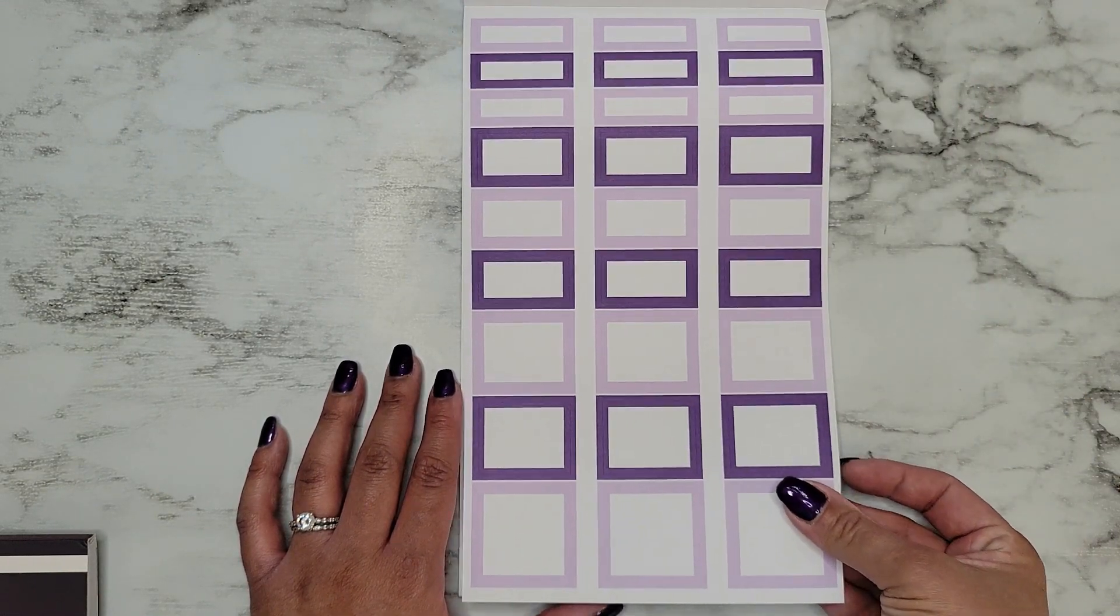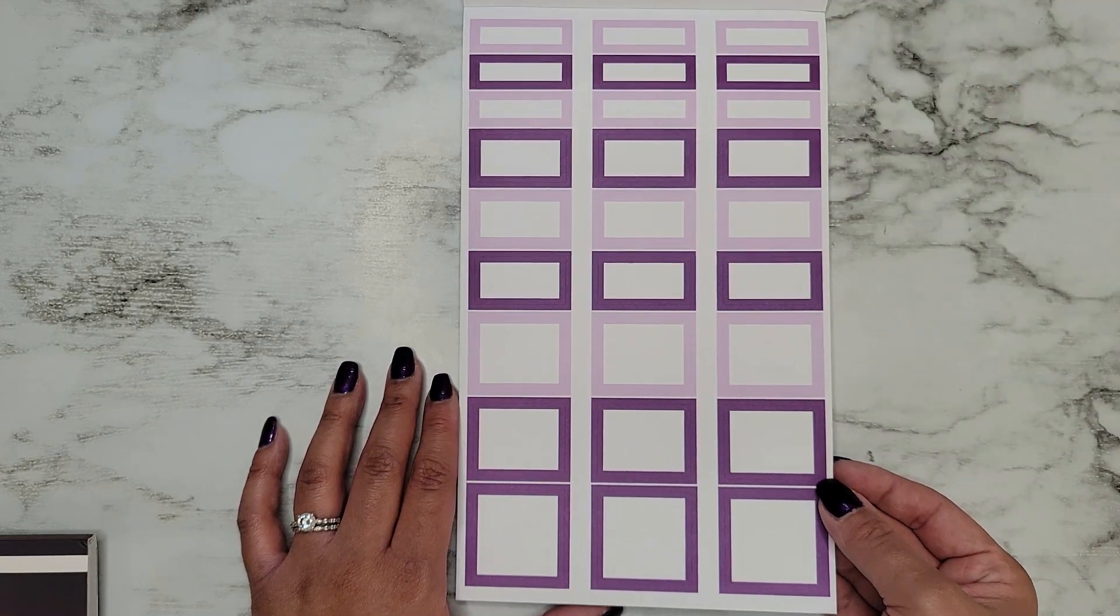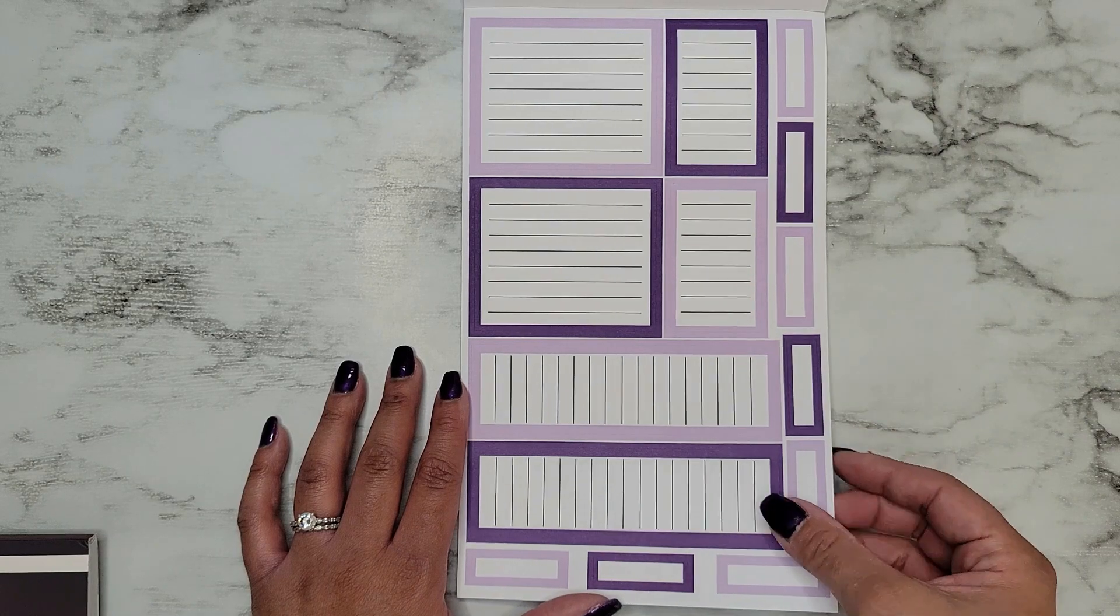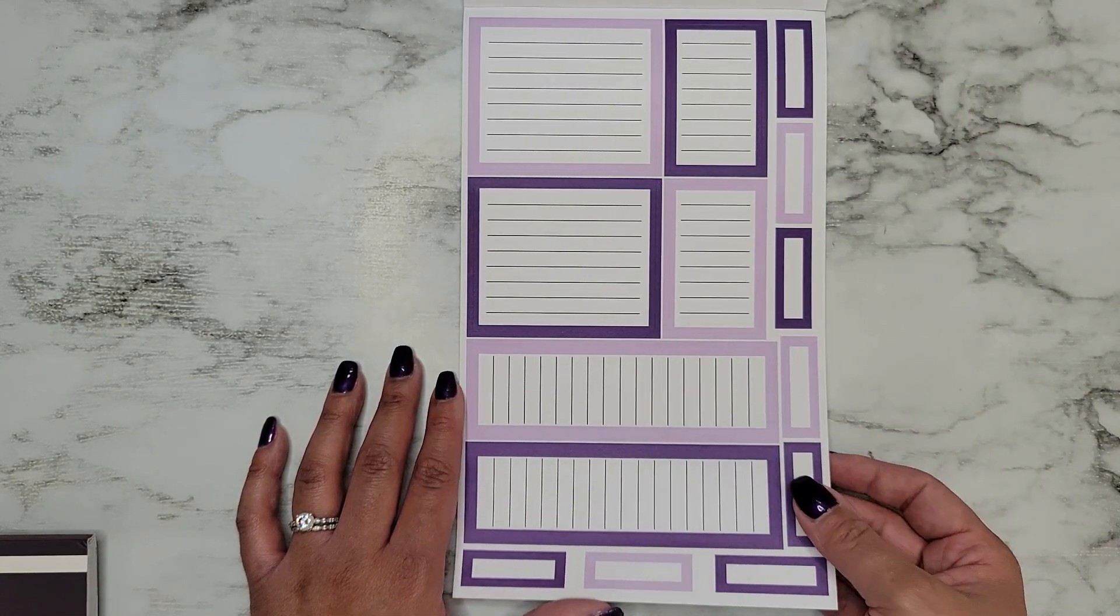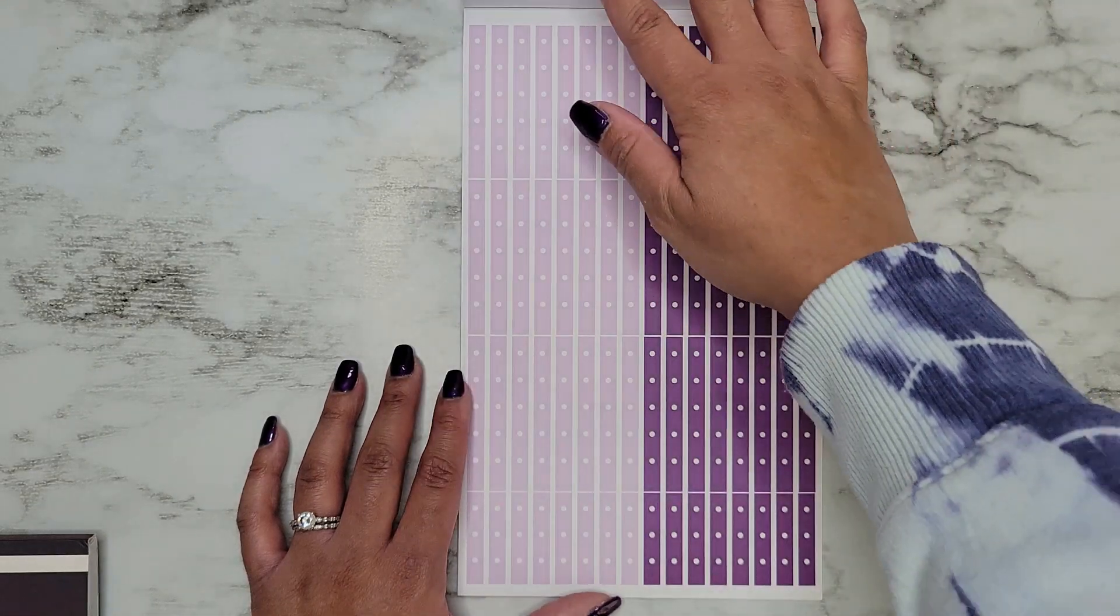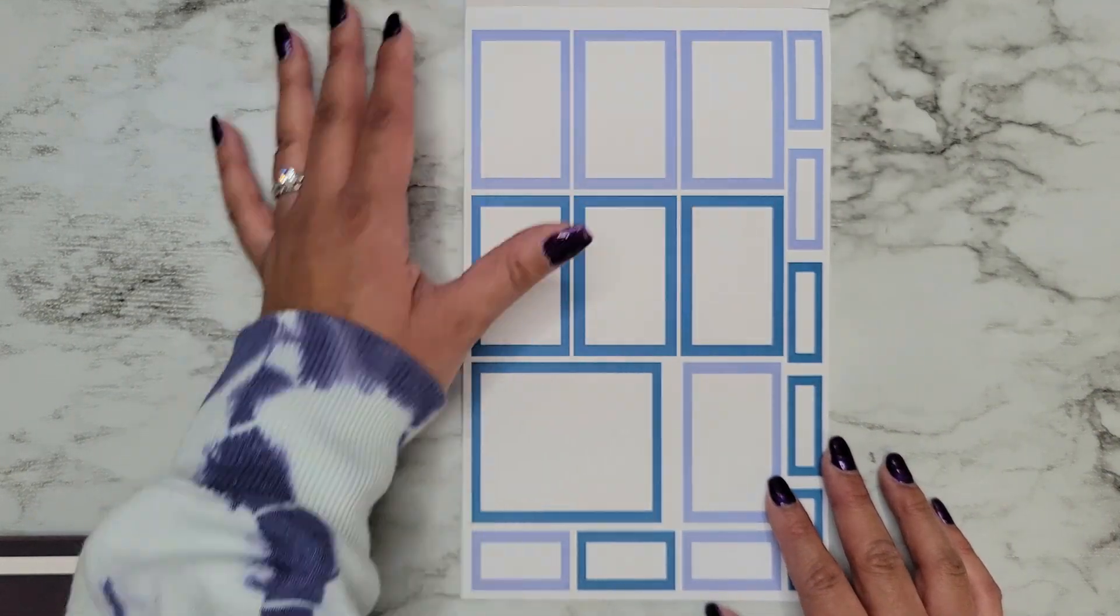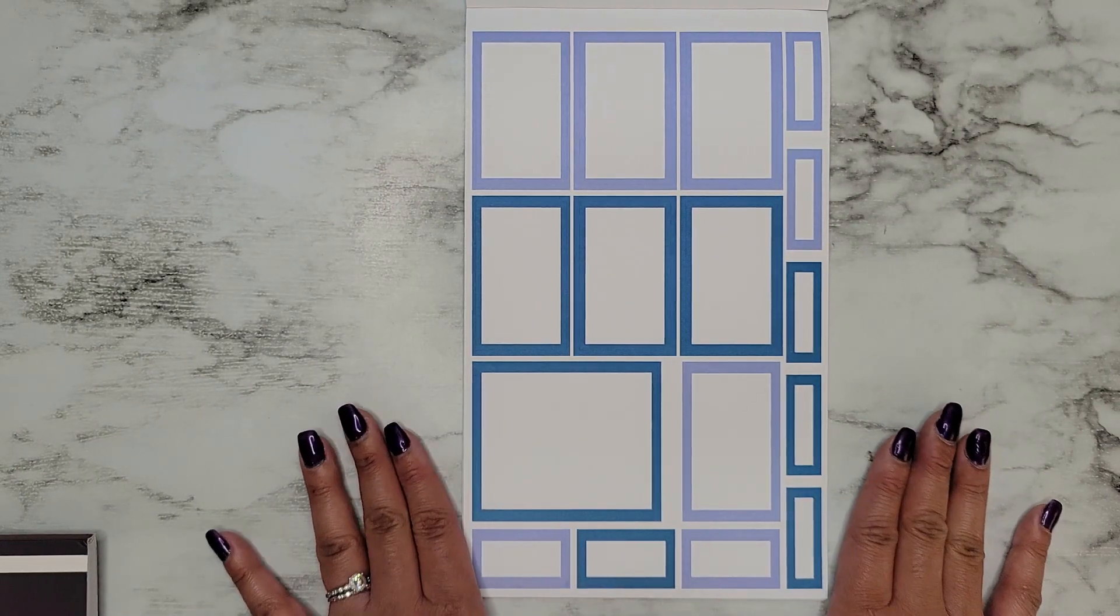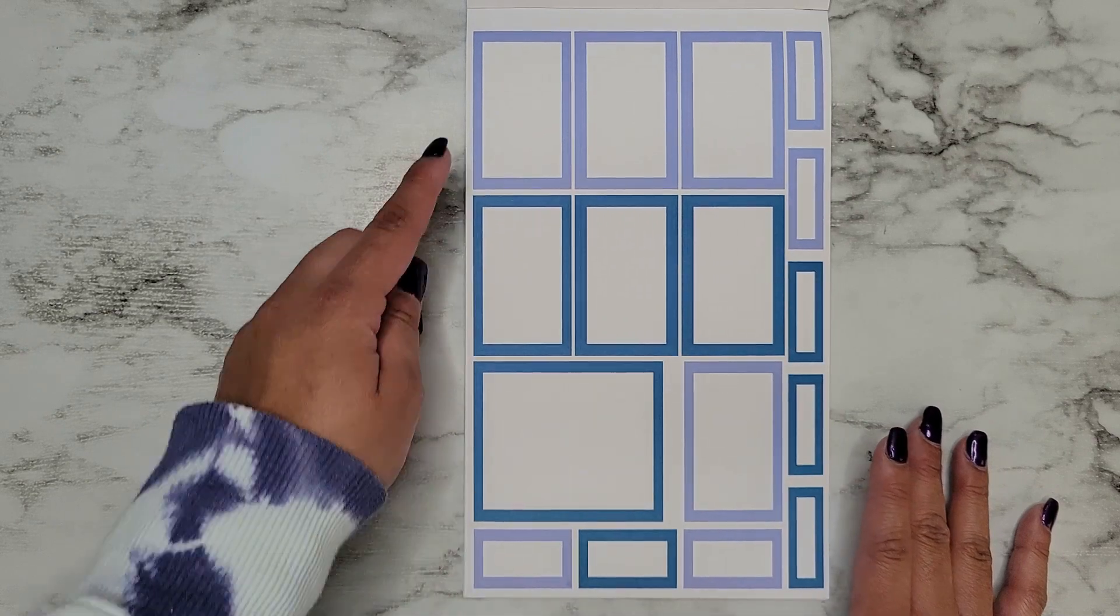Then the smaller boxes, and then our lines, and then the checklists.